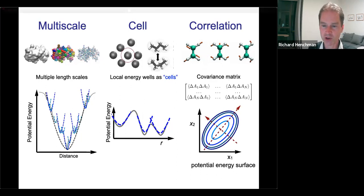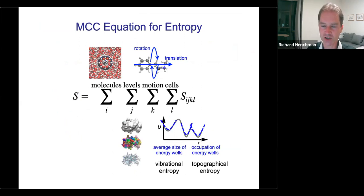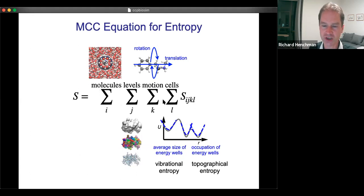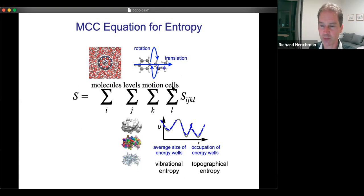Now I'll talk about the general equation for the method — a pretty simple equation. We have a summation over four terms: first over all molecules in the system, adding up entropy for each molecule one at a time; second over all levels — whole molecule level, residue level for a protein, and united atom level; then over all different kinds of motion, either rotation or translation; and finally over the entropy of cells or energy wells in the system.